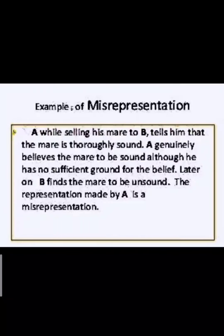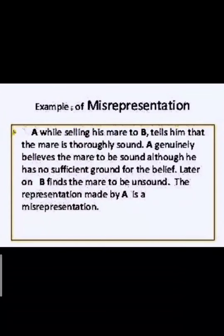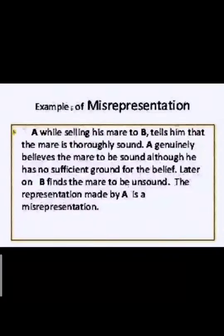Let us look into another example. A, while selling his mare to B, tells him that the mare is thoroughly sound. A genuinely believes the mare to be sound, although he has no sufficient ground for the belief. A has not cross-checked the soundness of the mare — he believes it to be sound, so he went to sell it to B. This is basically an unwarranted statement by A on the soundness of the mare. Later on, B finds the mare to be unsound. It was an advantage to A — he got the price — and B was prejudiced because he ultimately got an unsound mare. The representation made by A is a misrepresentation: he had made a false statement as to the soundness of the mare, but the very important fact is that he made it without any intention to deceive. Rather, he himself believed the mare to be sound. This is a case of misrepresentation.